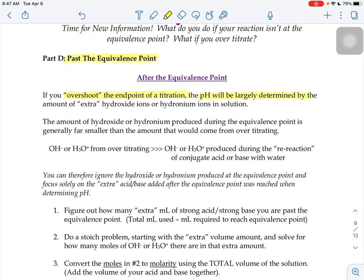Well, the pH is going to be largely determined by the amount of extra hydroxide or hydronium ions in solution. We've learned about how a weak acid or weak base could hydrolyze with water, how the products of our reaction at the equivalence point and beyond can re-react and form extra hydroxide or hydronium. But the amount of hydroxide or hydronium that comes from those reactions is relatively small. And so really it comes from the amount that would come from over titrating.